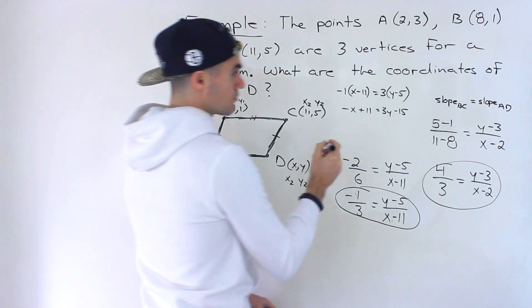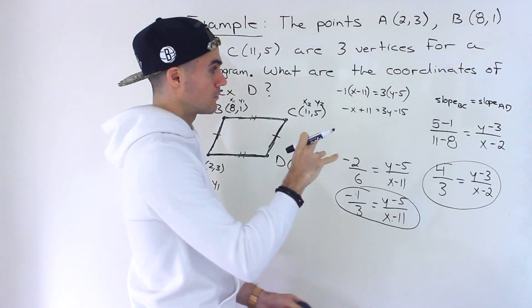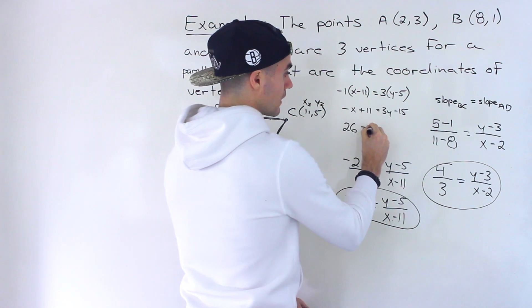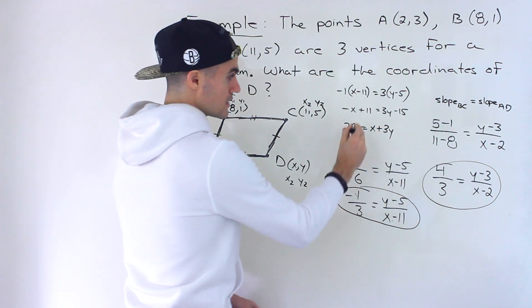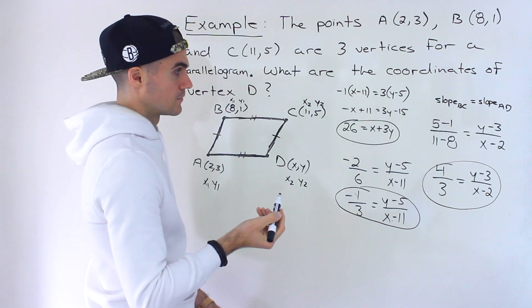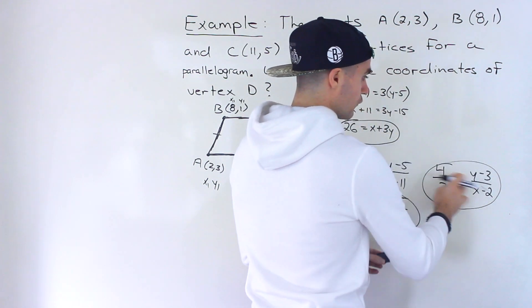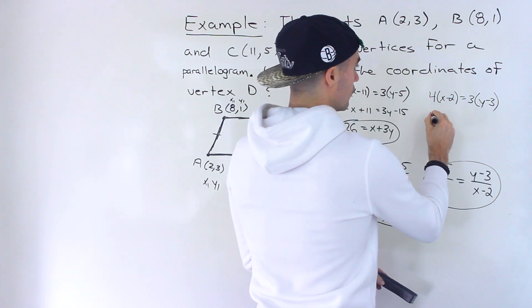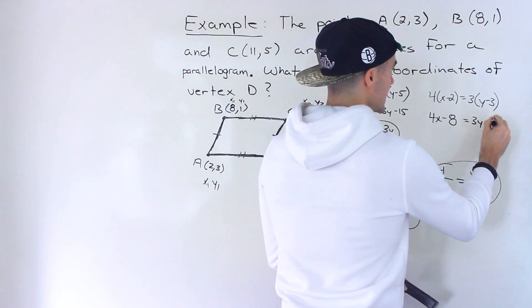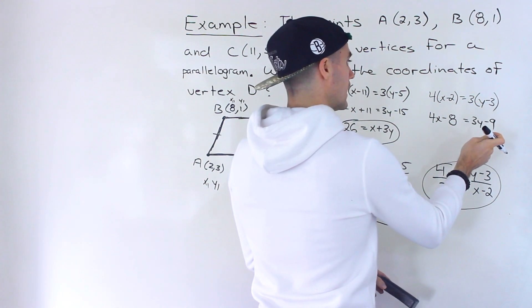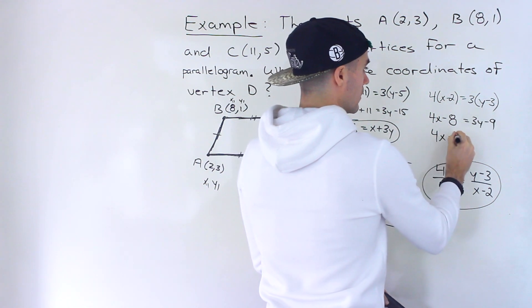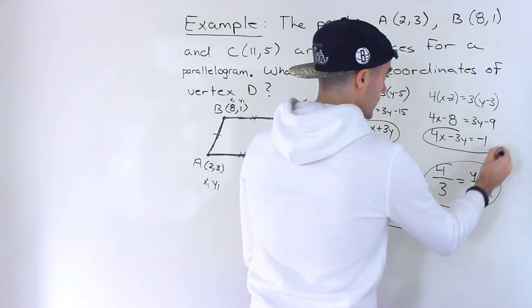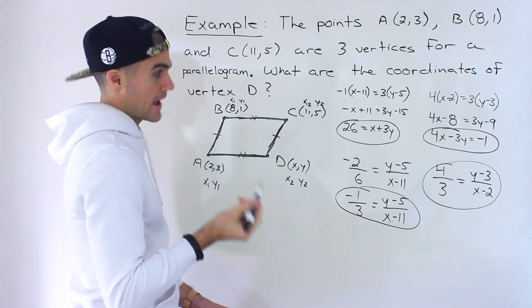And then let's actually bring all of the letters to one side, all the numbers to the other. So I'm going to bring the negative 15 over, 11 plus 15 would give us 26. And then the negative X I'll bring over. So we'll have X plus 3Y. Okay, so this simplifies into that right there. And then same thing here, we'll have 4 times X minus 2 equals 3 times Y minus 3, 4X minus 8 equals 3Y minus 9. Let's bring the, from here, it doesn't matter. Let's bring the 3Y over. And then I'm going to bring the negative 8 over. So we'll have negative 9 plus 8, which would give us negative 1. And so we have that next equation.